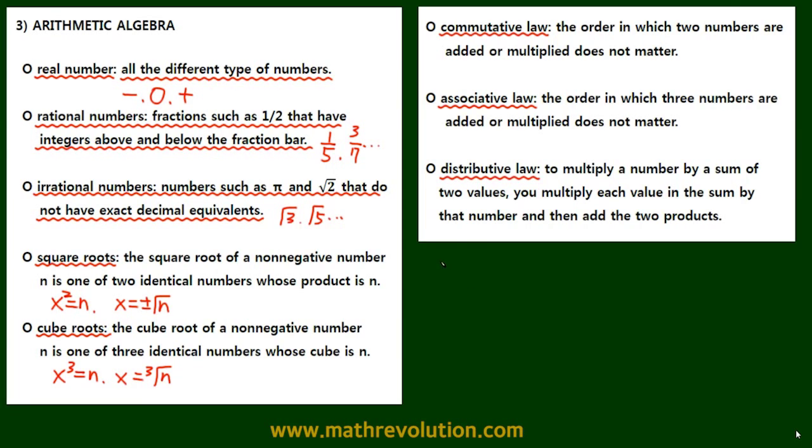Now a commutative law is the order in which two numbers are added or multiplied does not matter. So 1 plus 2 is the same as 2 plus 1. The order doesn't matter.